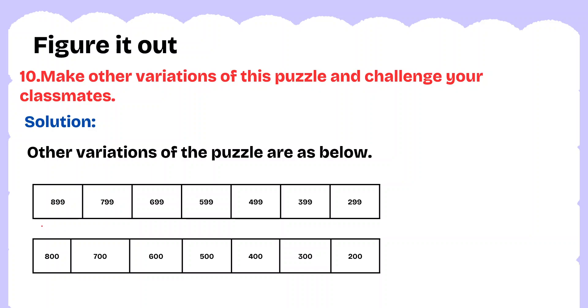Make other variations of this puzzle and challenge your classmates. We have taken examples using both odd numbers — 800, 99, 799, 699, 599 in sequential order — and even numbers. Thank you, see you next time.